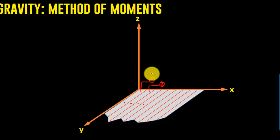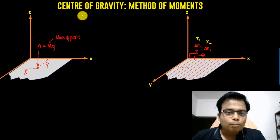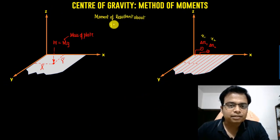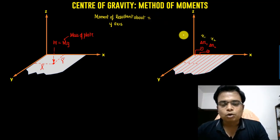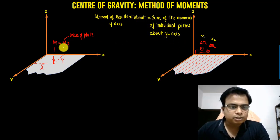Each slice has its individual mass: delta m1 for slice one, delta m2 for slice two, and so on. Each slice also has its own x-coordinate of the center of gravity — x1 for slice one, x2 for slice two, x3 for the next, and so on. The method of moments states: the moment of the resultant about the y-axis equals the sum of the moments of the individual slices about the y-axis.